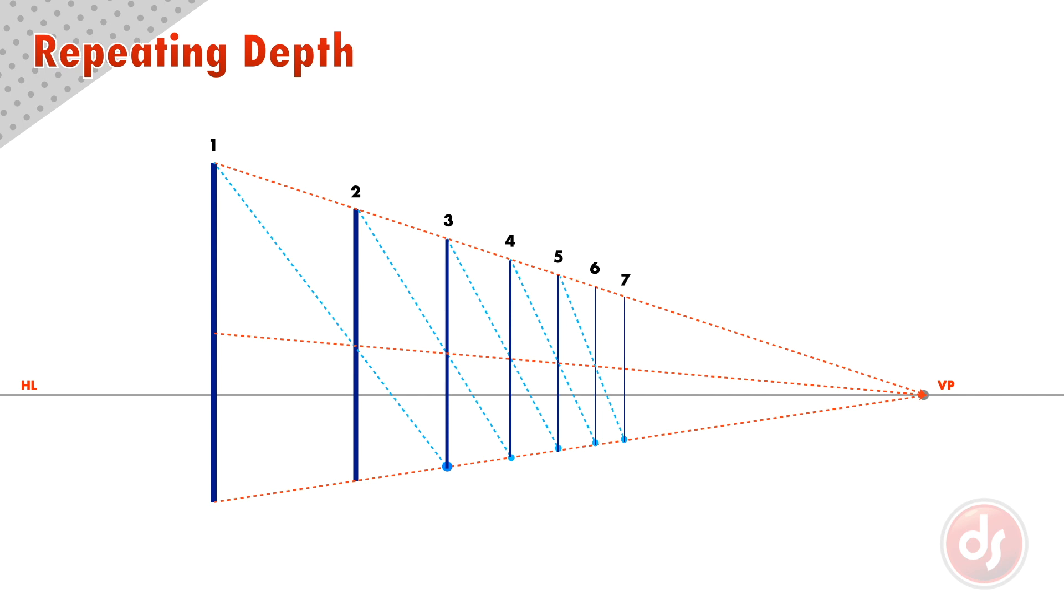In each case, the next pole is slightly closer to the previous pole by the exact amount of convergence we need. It is the original depth, repeated in space.